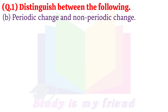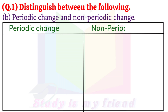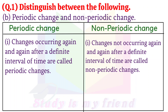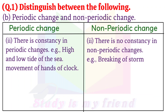B. Periodic Change and Non-Periodic Change. Periodic Change 1: Changes occurring again and again after a definite interval of time are called periodic changes. Non-Periodic Change 1: Changes not occurring again and again after a definite interval of time are called non-periodic changes. Periodic Change 2: There is constancy in periodic change. For example: high and low tide of the sea, movement of hands of a clock. Non-Periodic Change 2: There is no constancy in non-periodic changes. For example: breaking of storms.